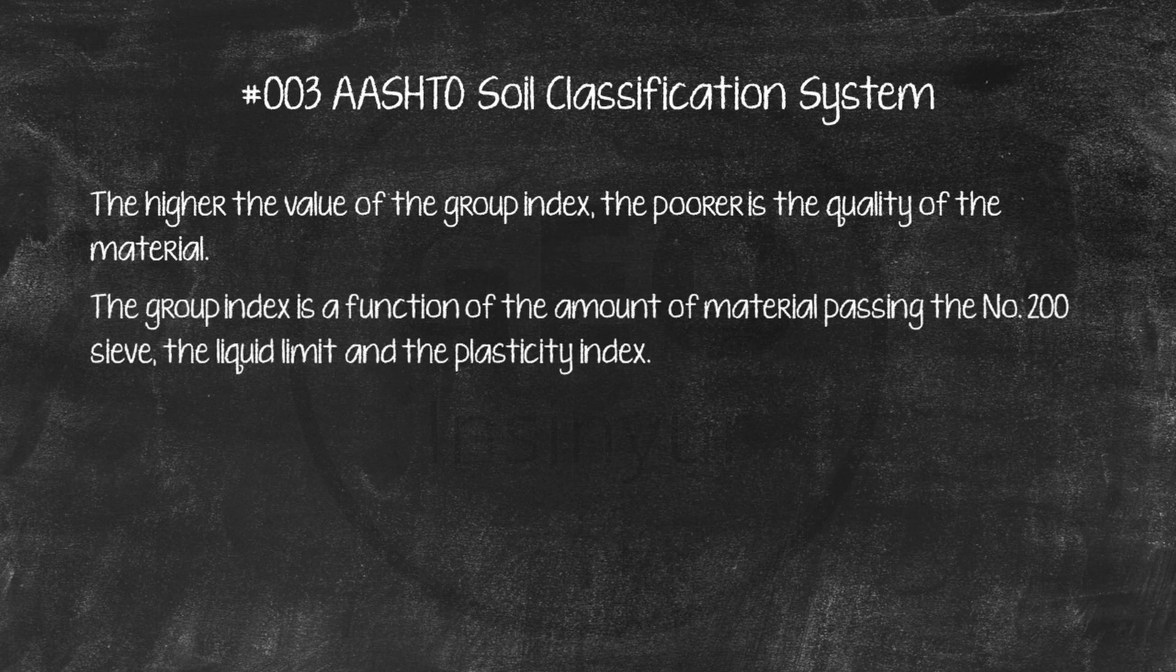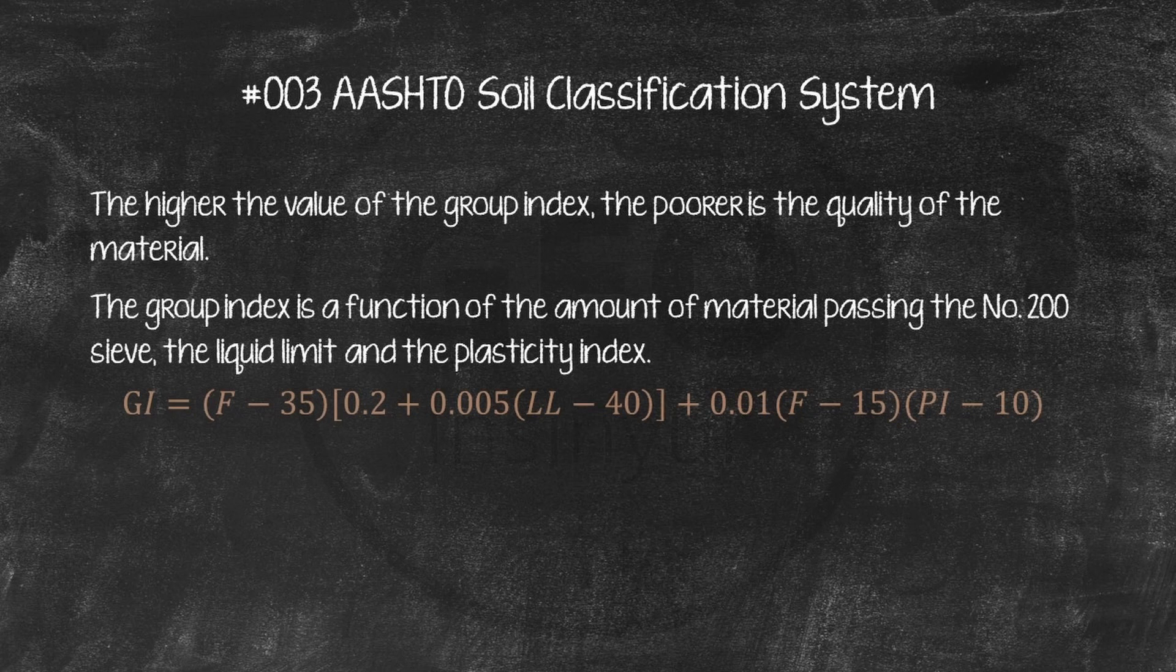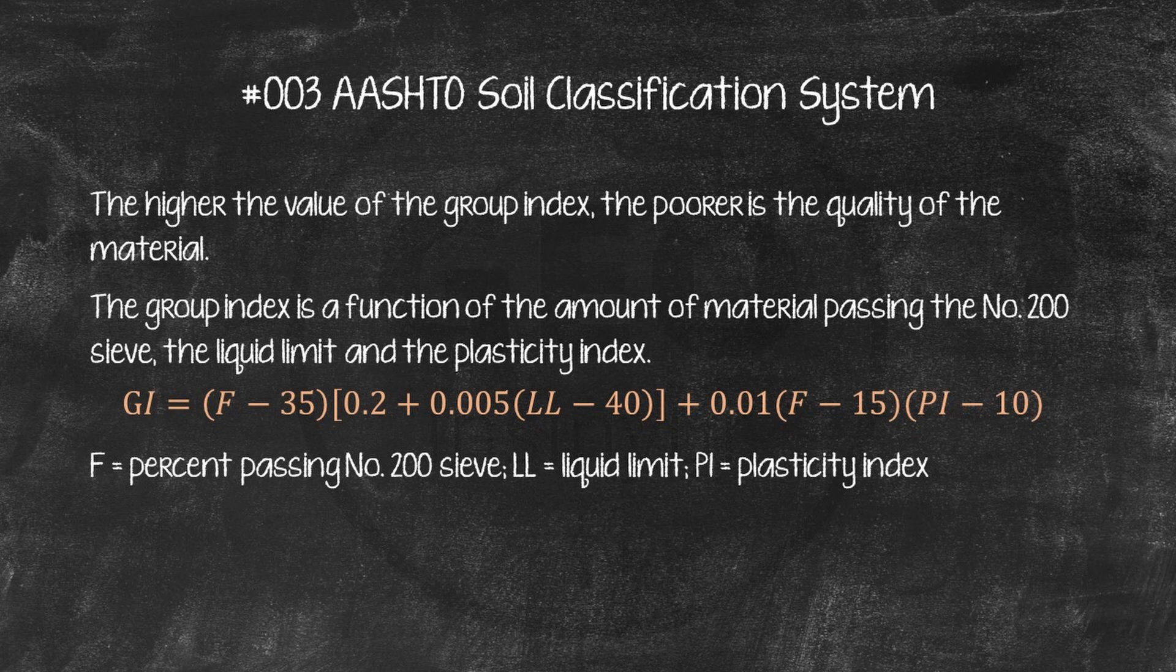The group index is a function of the amount of material passing the number 200 sieve, the liquid limit and the plasticity index. The group index is given as this equation. Where F is percent passing number 200 sieve and the other terms have been defined before. The GI index is reported to the nearest whole number, 2.4 reported as 2, 2.5 reported as 3, and if GI less than 0, it is set to 0.